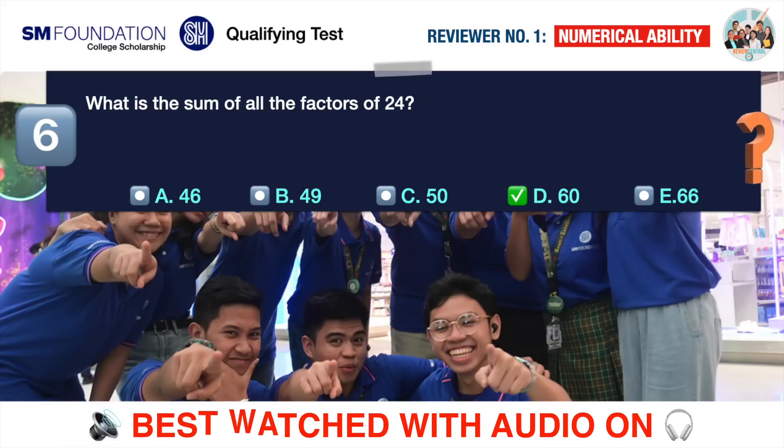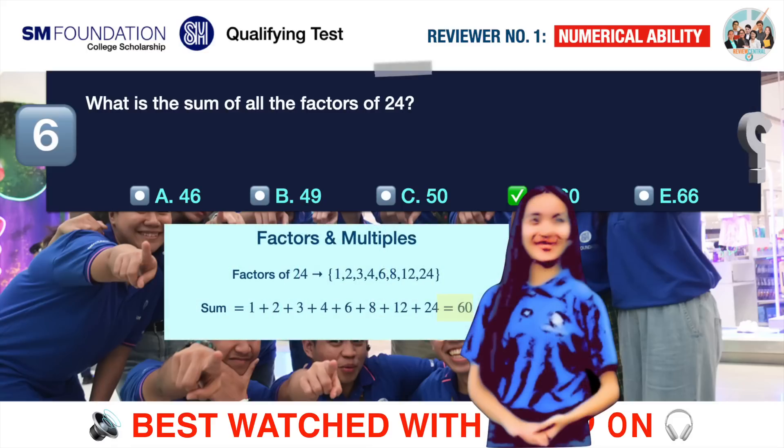The correct answer is D 60. The factors of 24 are 1, 2, 3, 4, 6, 8, 12, and 24. Adding them all up, we should arrive at 60.